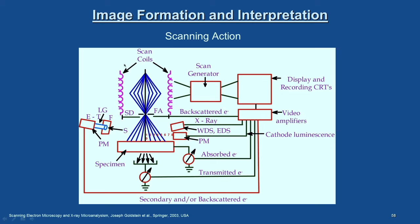What we are now interested in is what exactly these coils do during the scanning action. As discussed earlier, the upper portion of the coil deflects the beam half the move away from the optical axis, and the other set of coils brings it back to the optic axis, such that a rectangular raster scan is established on the sample.